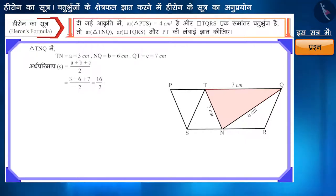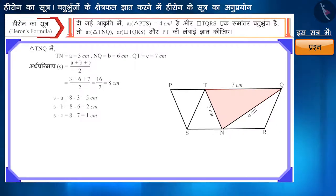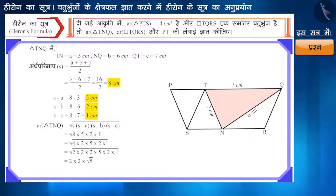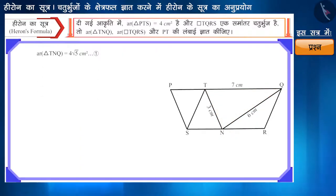हमें यहाँ s = 8 cm प्राप्त होगा। अब हम (s−a), (s−b), और (s−c) का मान निकालेंगे। इन सभी का माप हेरोन के सूत्र में रखकर इसे हम इस प्रकार हल करेंगे, और हमें त्रिभुज TNQ का क्षेत्रफल 4√5 वर्ग सेंटीमीटर प्राप्त होगा।